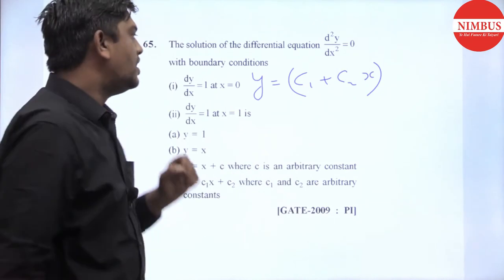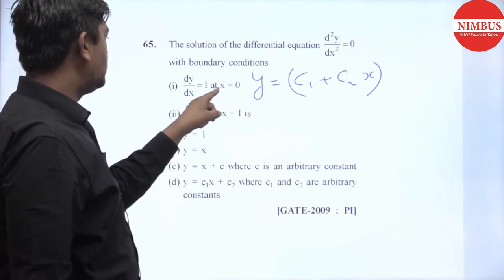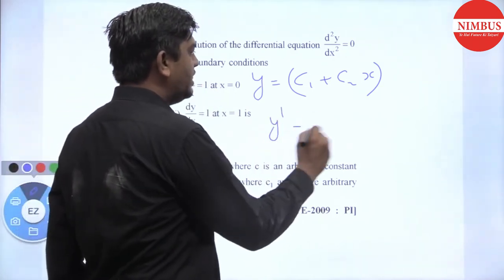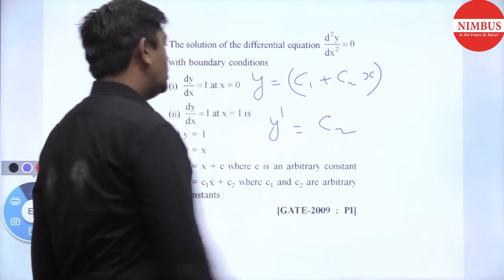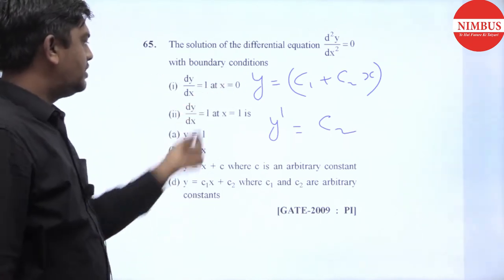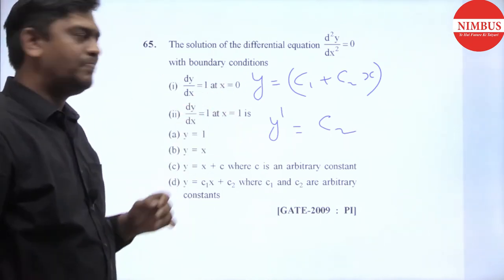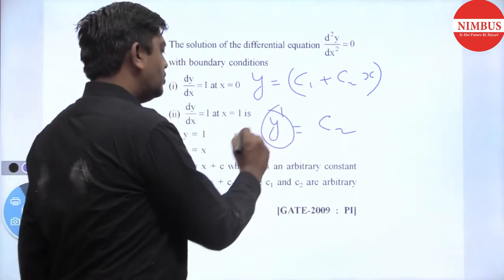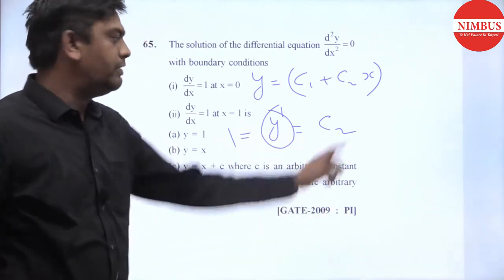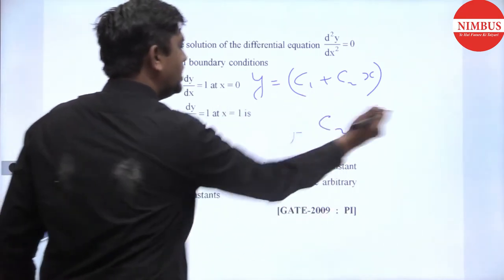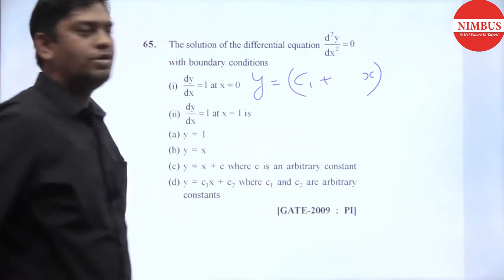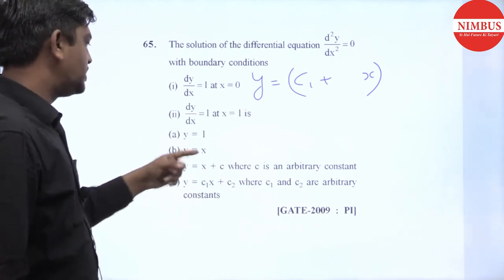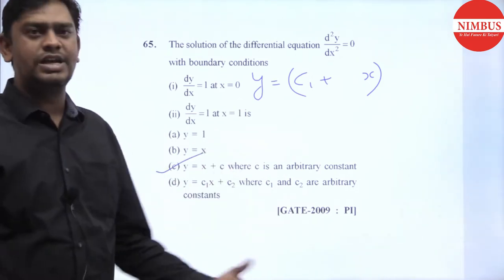Now we can apply the condition. As we have the condition in y dash, let's take dy/dx. If we put the condition, when x equals 1, our value is 1. So when we integrate, y is 1 + x. So c₁ + x, or x + c₁, this is option number C. Option number C is the correct answer.